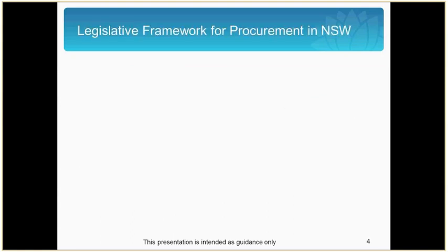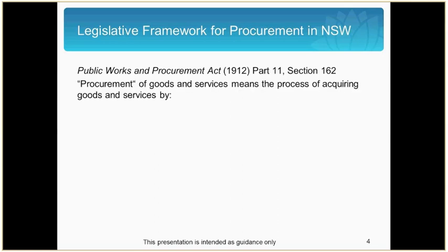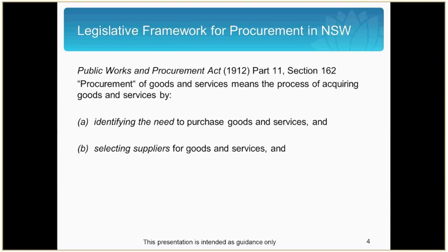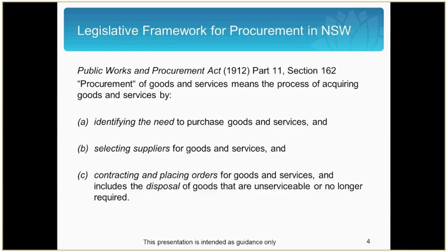The legislative framework for procurement in New South Wales is the Public Works and Procurement Act 1912, which defines procurement as identifying the need to purchase goods and services, selecting suppliers for goods and services, and contracting and placing orders for goods and services including the disposal of goods that are unserviceable or no longer required. This training module is looking at the third step: contracting under the ProcureIT framework.